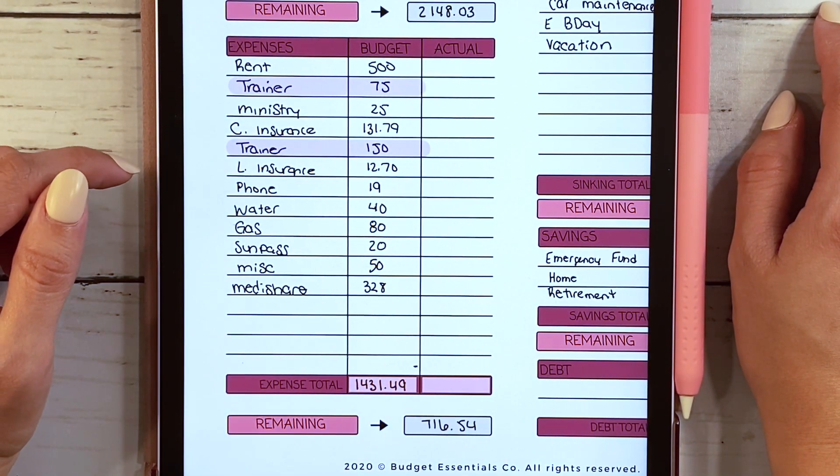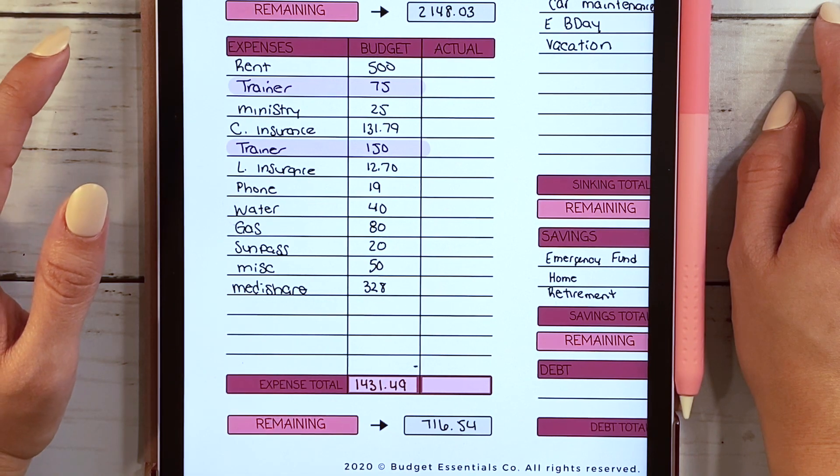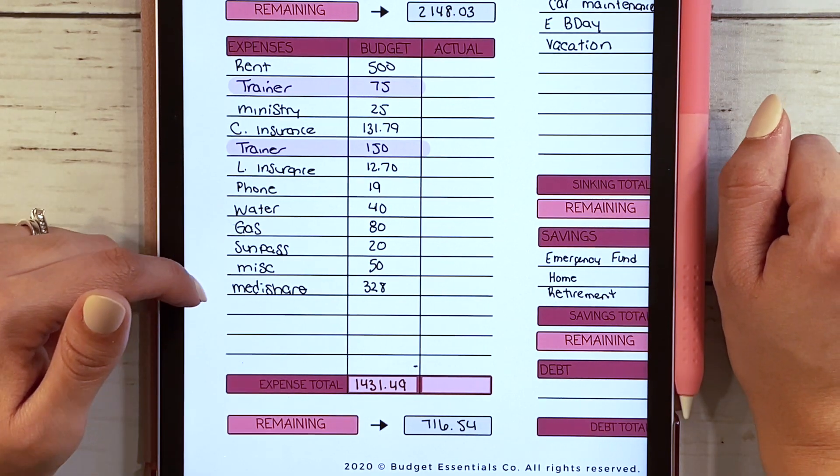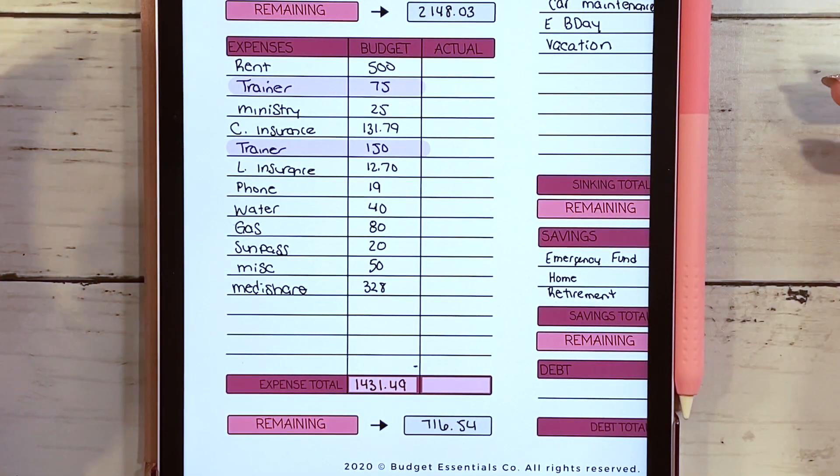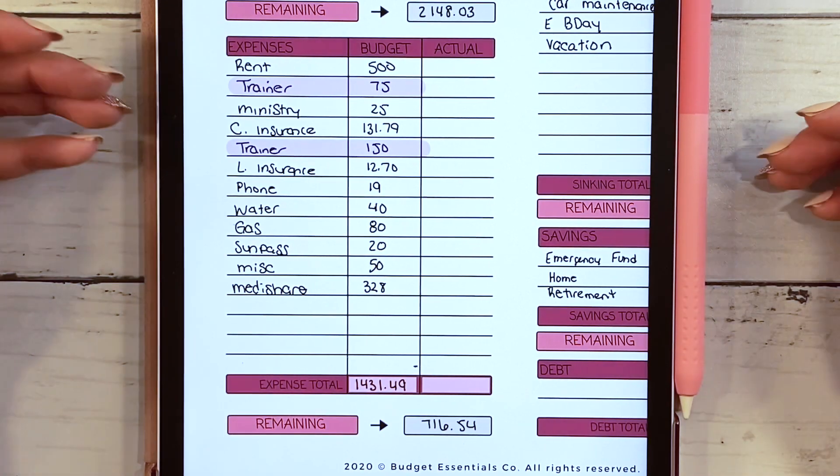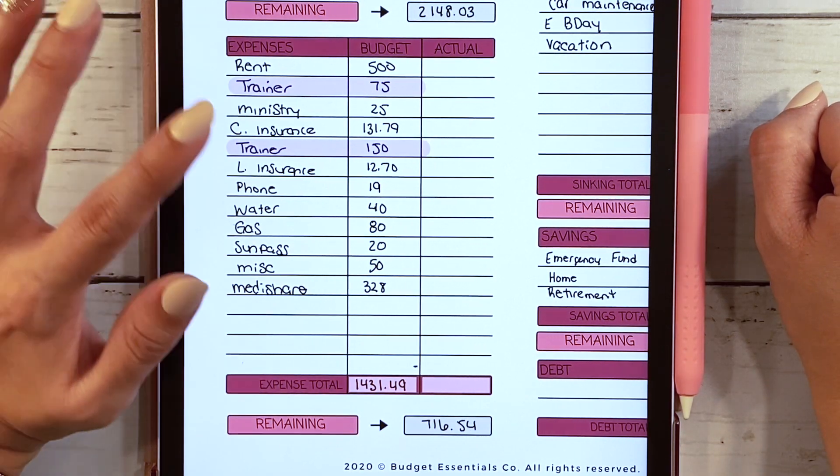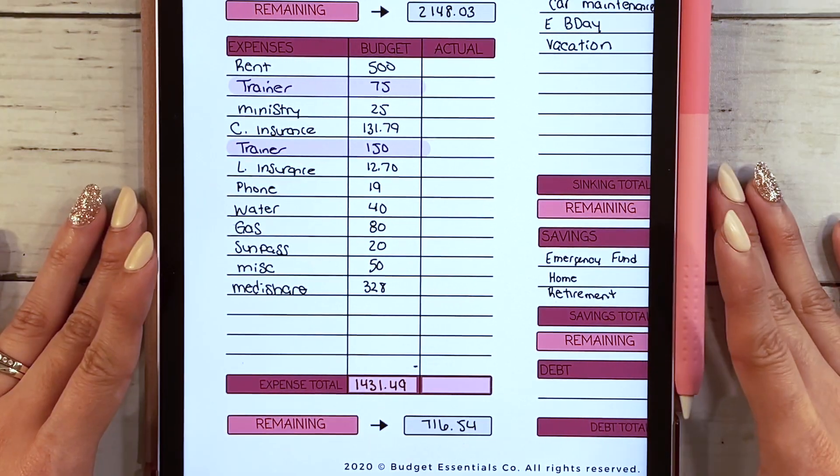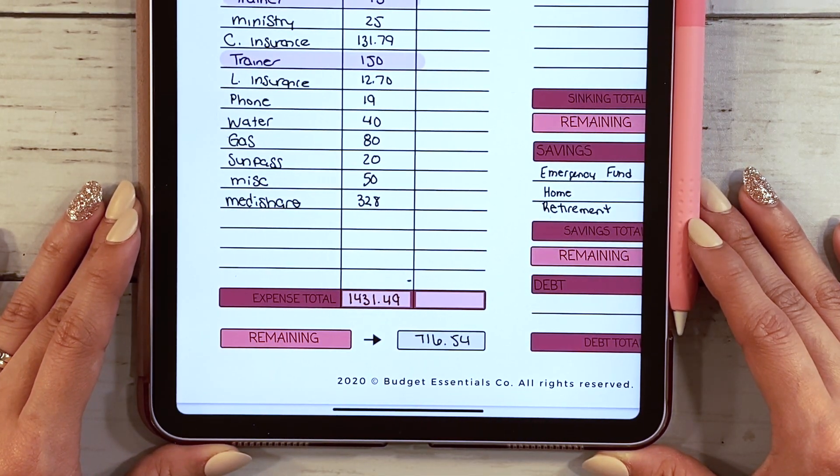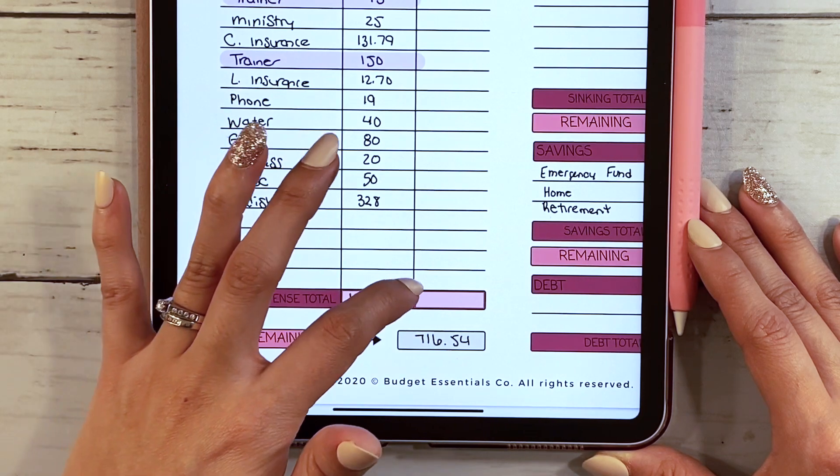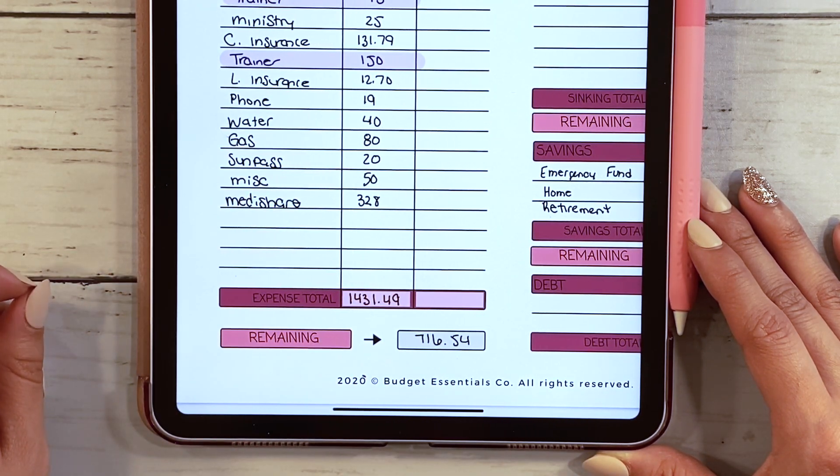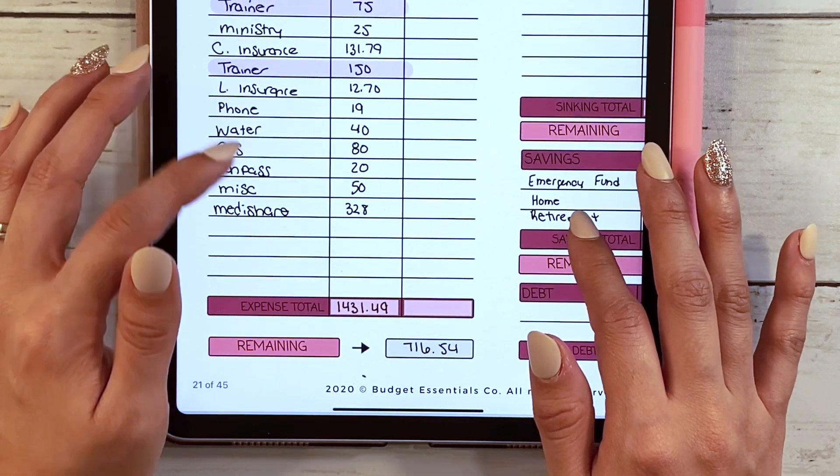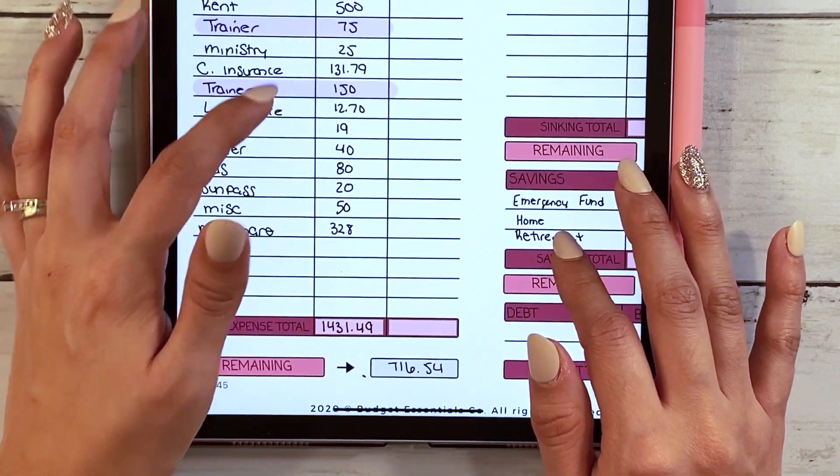There's one expense here that has been added from this paycheck and that is Medishare. We have news to share but that's coming a little bit later. Medishare is a type of health coverage to help us with our medical costs. We enrolled in that, so this is the monthly share amount which we just started, $328. This is going to be a new expense for us that's going to adjust a few things for our budget.